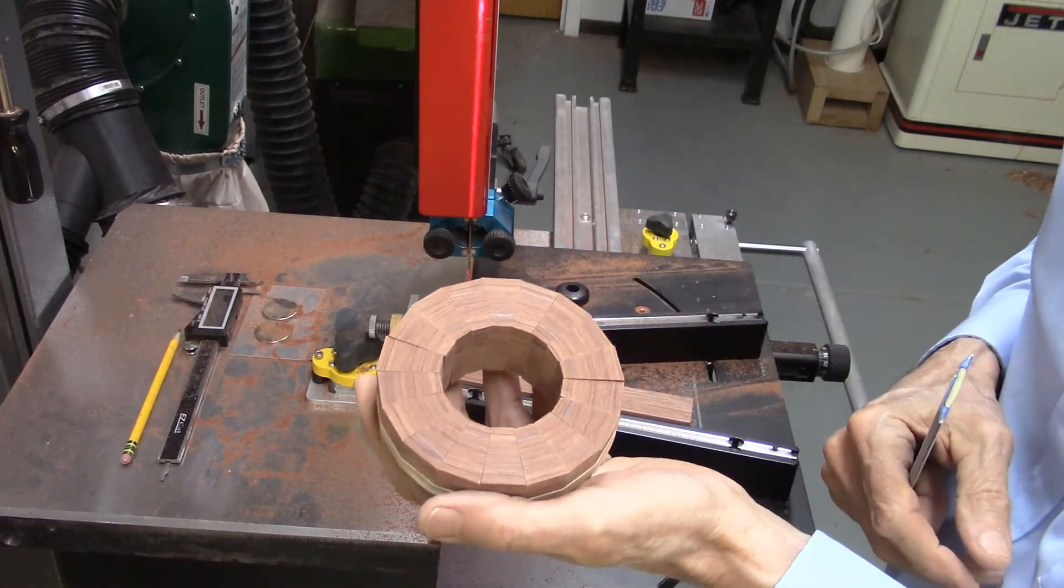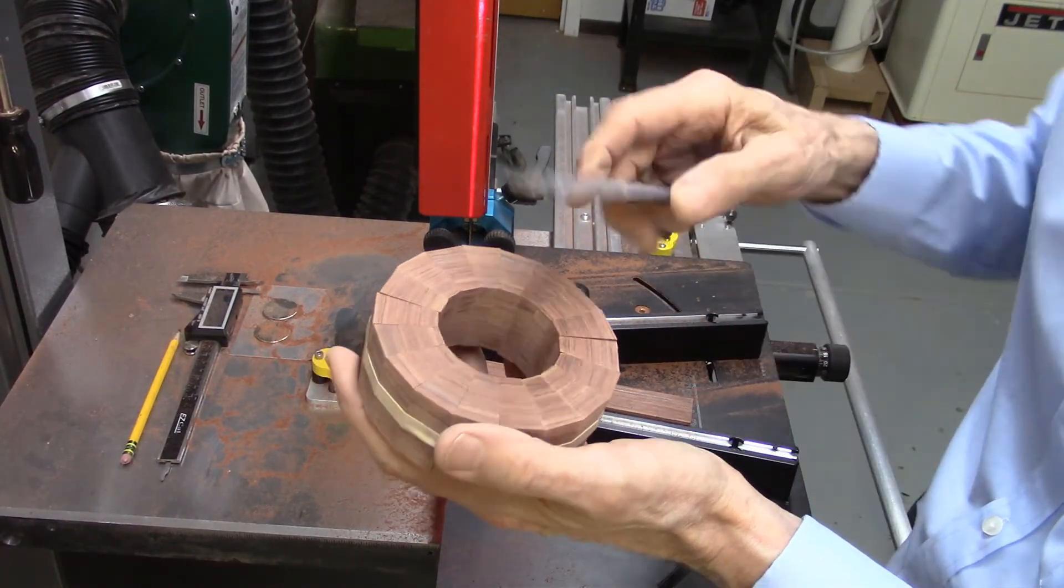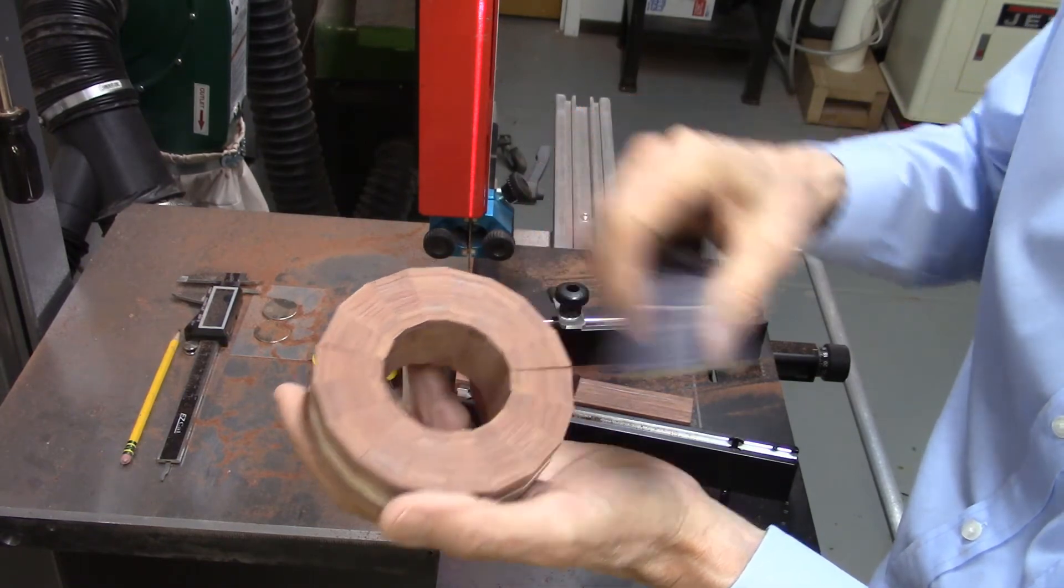So after sanding off the fuzzies and cleaning up the edges, I have my completed disc, exactly four inches in diameter.